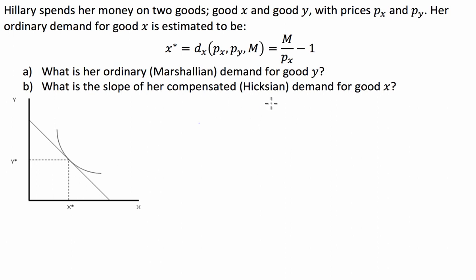Since one of the solutions to our demand function is given — X star — we can use this along with our budget constraint to find what Y star is going to be. That is the solution to part A of our problem: the optimal consumption bundle X star, Y star.